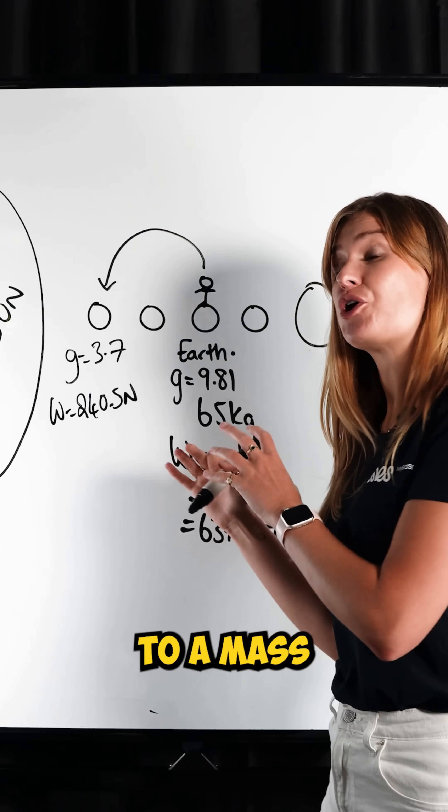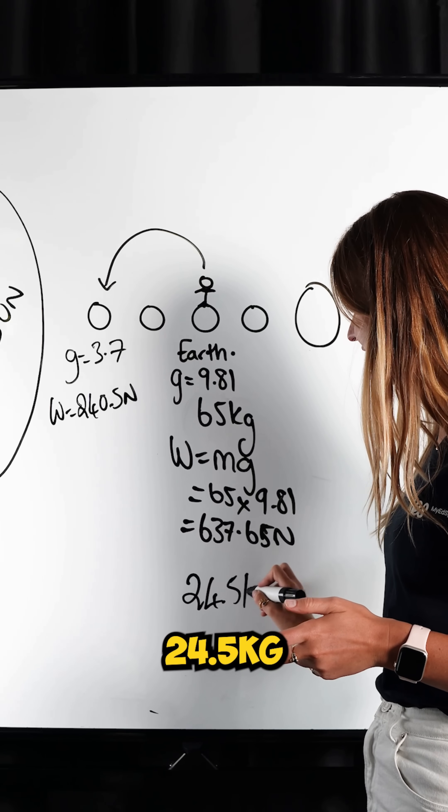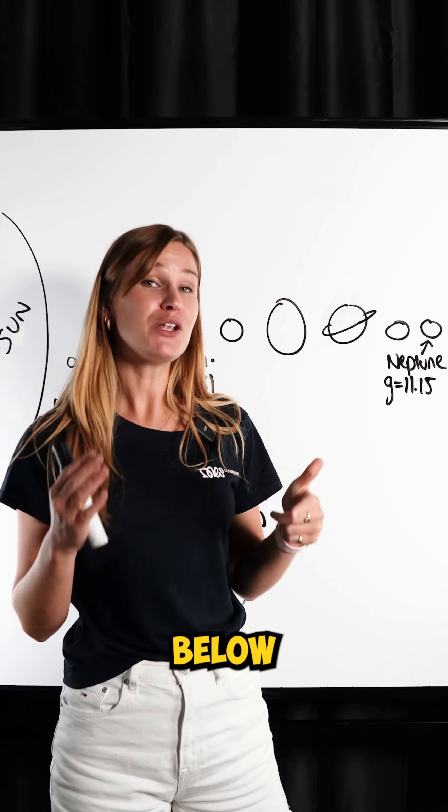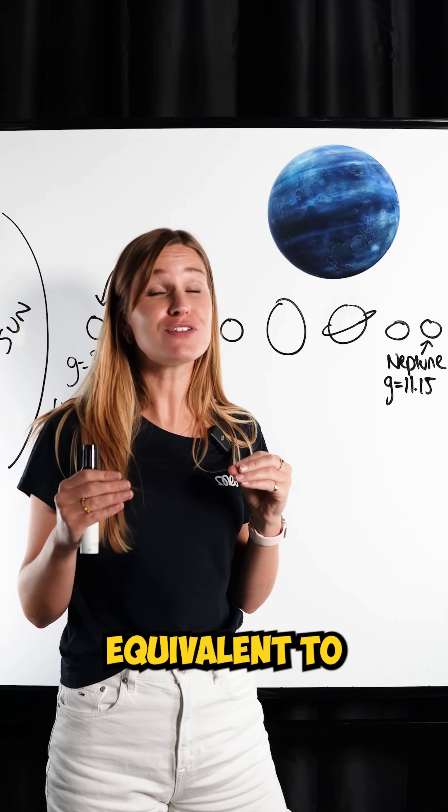That's equivalent to a mass on Earth of around 24.5 kilograms, like me having the mass of a dog on Earth. Comment below what weight you would be on Neptune and what animal that would be equivalent to you if you're on Earth.